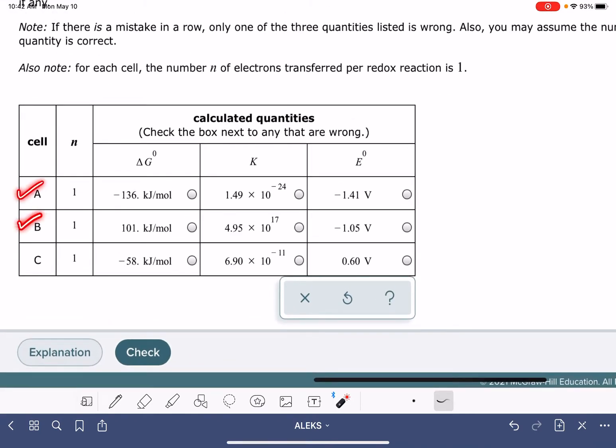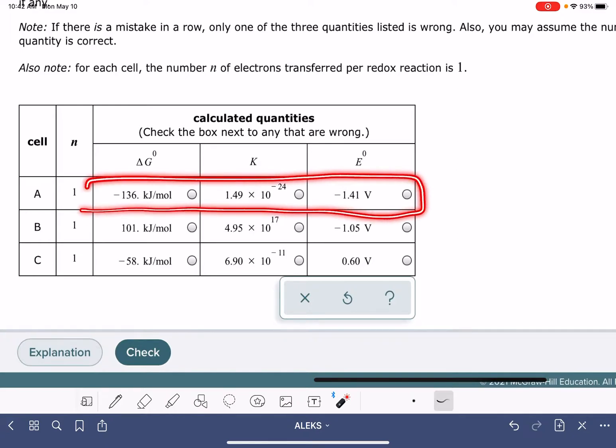So this problem has three sets of data, cell A, B, and C. And for each one of these sets of data, you have to find the one calculated quantity that is inconsistent or incorrect.